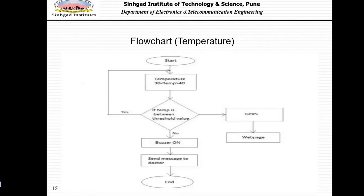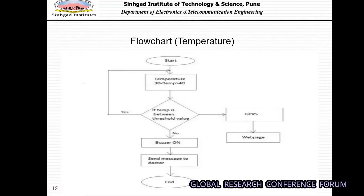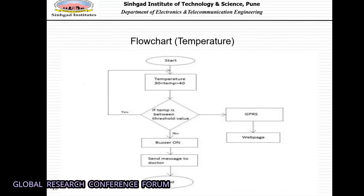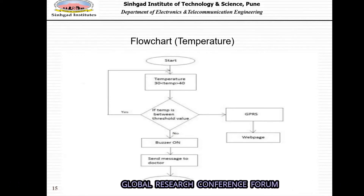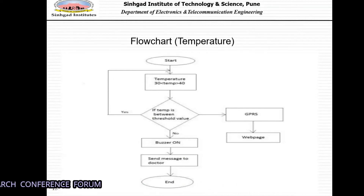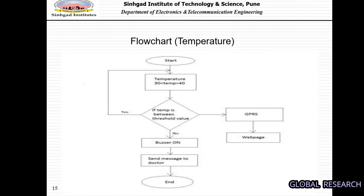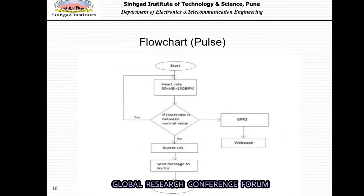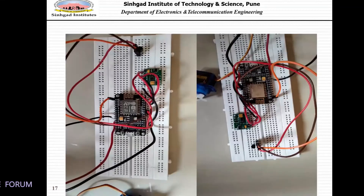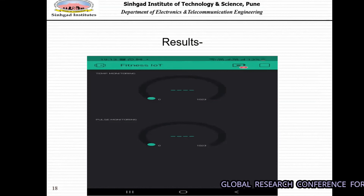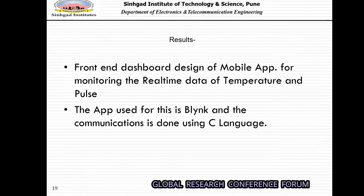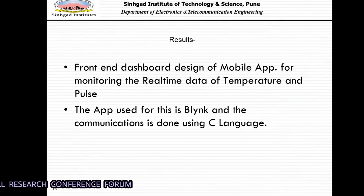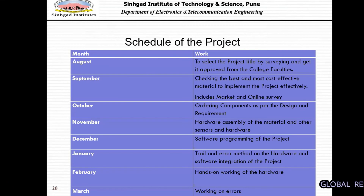This is the flowchart for temperature monitoring. When execution starts, it checks a threshold temperature. If the reading is within the threshold, it loops back to check again. If not, it turns on a buzzer and sends a message to the doctor. The same logic applies to the pulse flowchart. These are some circuit diagrams. We were using the Blynk app so that a doctor can monitor the patient from anywhere. These are the results showing the front-end dashboard design for the mobile app for monitoring real-time temperature and pulse data. This was the schedule of our project.